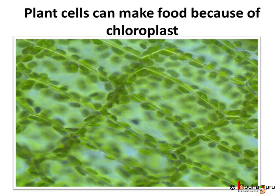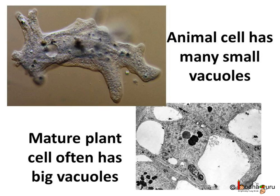Animal cells don't have plastids, hence they cannot perform photosynthesis. Both the plant and animal cells have vacuoles. Animal cells generally have many small vacuoles, but in case of plants, the cells have only one or few big vacuoles which they use to store food and waste.